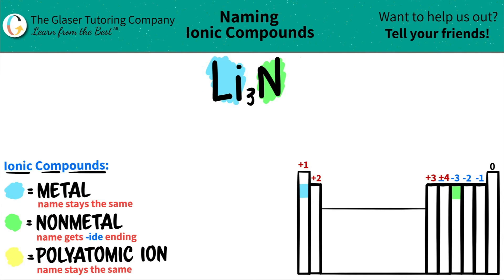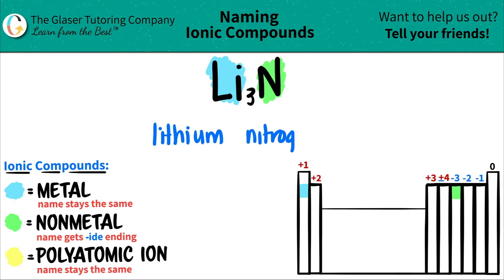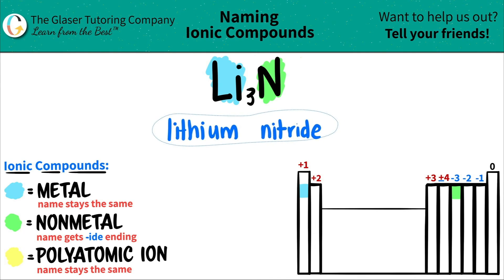Lithium comes first because it's listed first in the compound. That's the metal, and that name always stays the same, so this is just going to be lithium. Nitrogen is the non-metal — that name always gets the -ide ending. So it was nitrogen, but now we turn it into nitride. You drop the -ogen and add -ide.